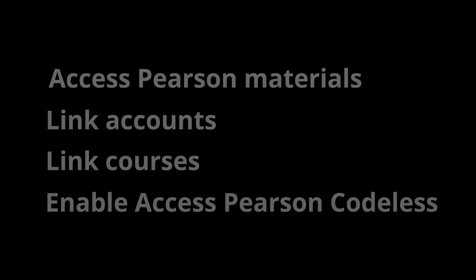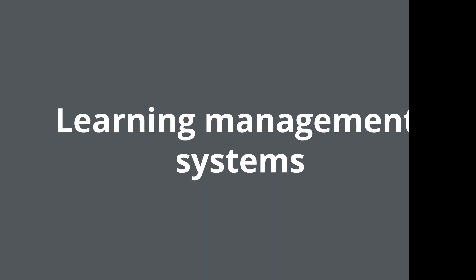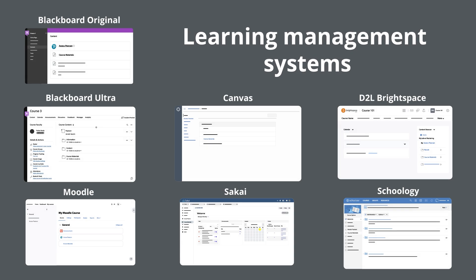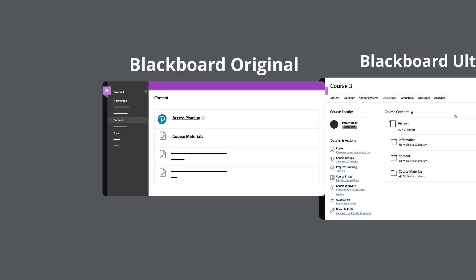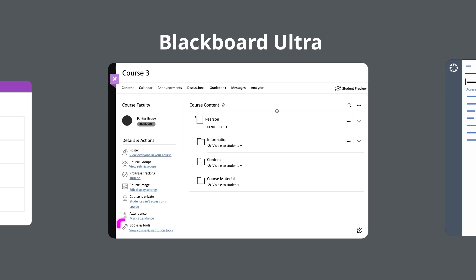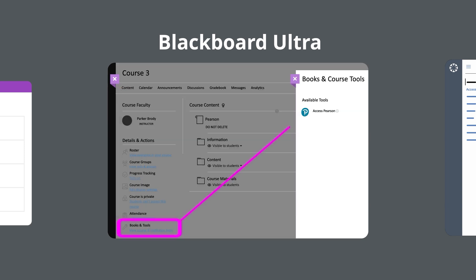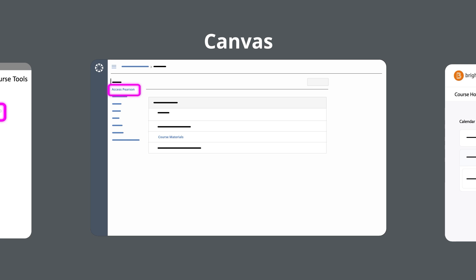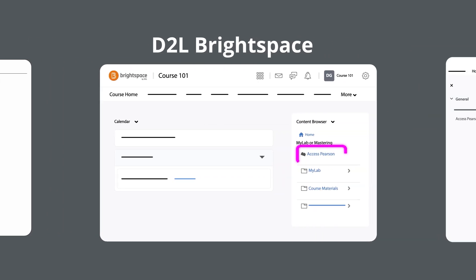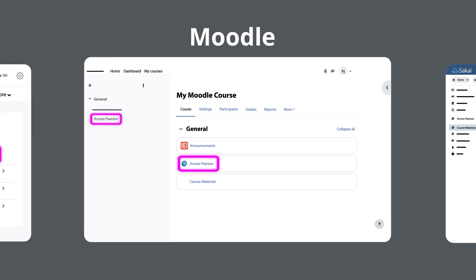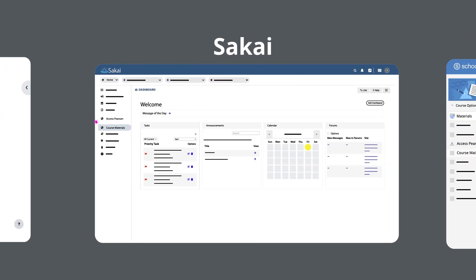First, let's access your Pearson materials from your LMS. Log into your LMS and enter the course you'd like to integrate with MyLab and Mastering. The name and location of the link you select to access Pearson depends on your LMS and course setup. The link is usually named Access Pearson and is located in the left navigation or a content area in your LMS course, though you may need to use a bookstore link instead, sometimes called course materials. We'll go over that more in the last chapter of the video. If you can't find the link in your LMS, check out the help pages linked in the description on how to get started with your specific LMS.